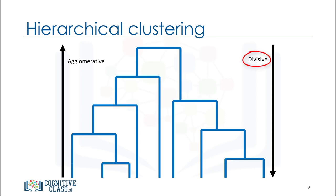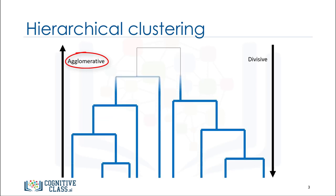Divisive is top-down, so you start with all observations in a large cluster and break it down into smaller pieces. Think about divisive as dividing the cluster. Agglomerative is the opposite of divisive — it is bottom-up, where each observation starts in its own cluster and pairs of clusters are merged together as they move up the hierarchy. Agglomeration means to amass or collect things, which is exactly what this does with the clusters. The agglomerative approach is more popular among data scientists, and so it is the main subject of this video.